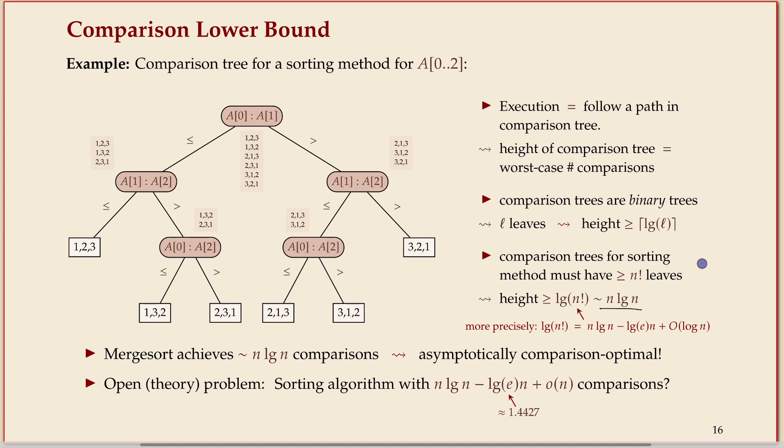Just to recap again very briefly the steps: we formulate a model for all algorithms, in this case that was all comparison trees. We use something about the problem that we're trying to solve, sorting in this case, to argue that all these programs have to have a specific shape. In this case, all of them need to have many leaves. And then arguing from the shape of the programs, that it's a binary tree, you can tell something about the cost. And that gives you a way to lower bound the cost. So every algorithm in this model needs to use so many comparisons.